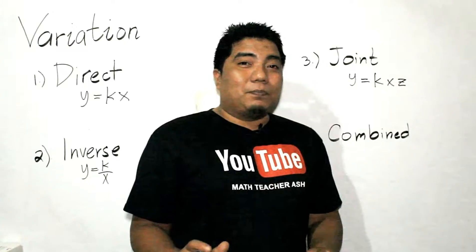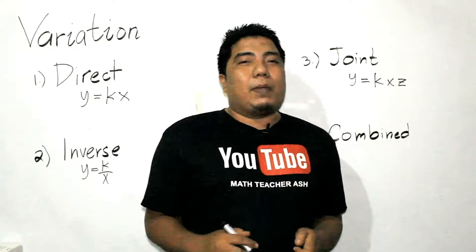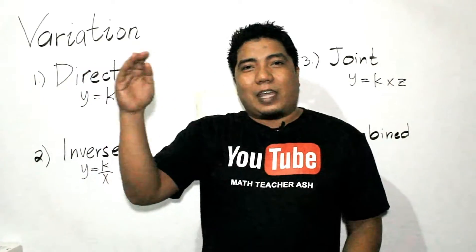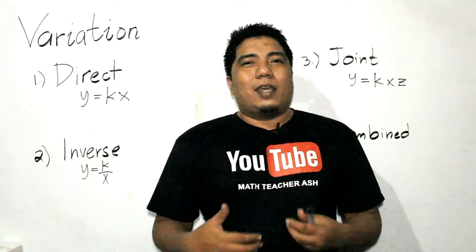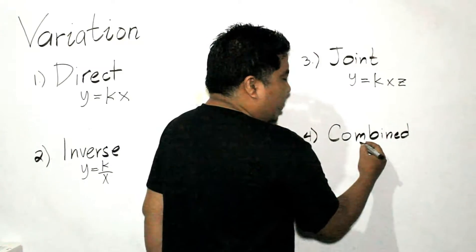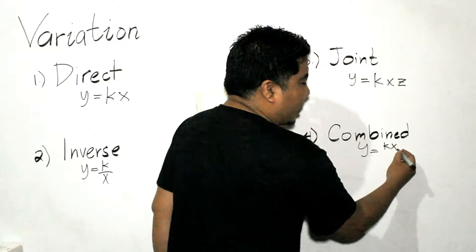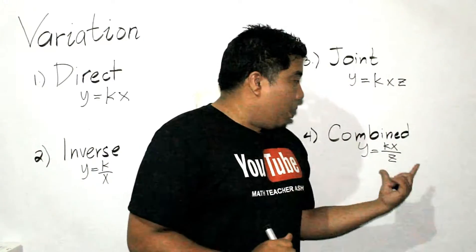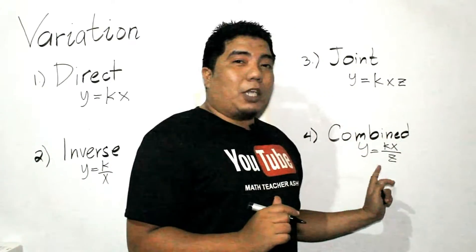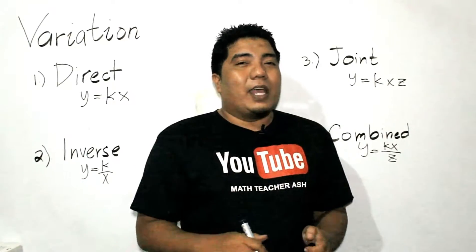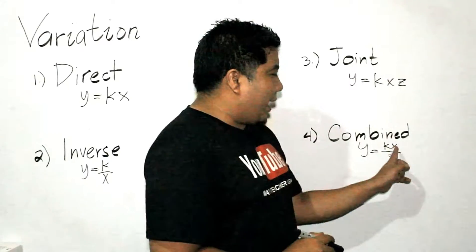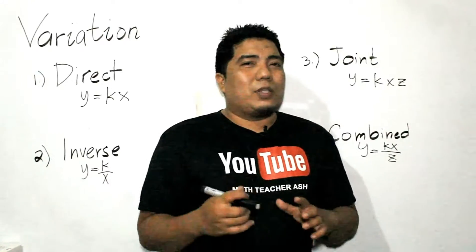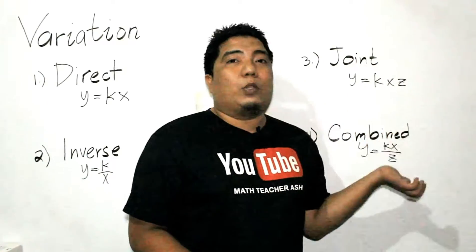Combined variation is named combined because it is the combination of direct and inverse variation. We write that as y is equal to kx over z, where x and y have a direct relationship, while z and y have an inverse relationship. So as x increases, y increases; as z increases, y decreases.